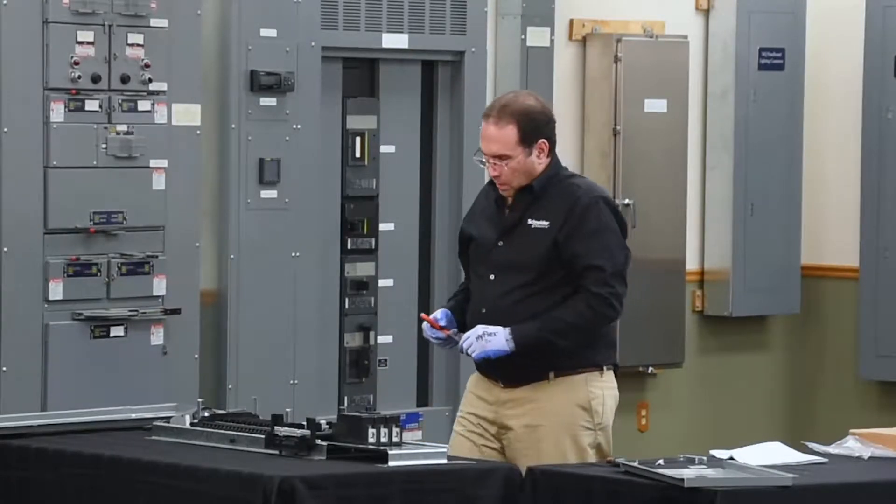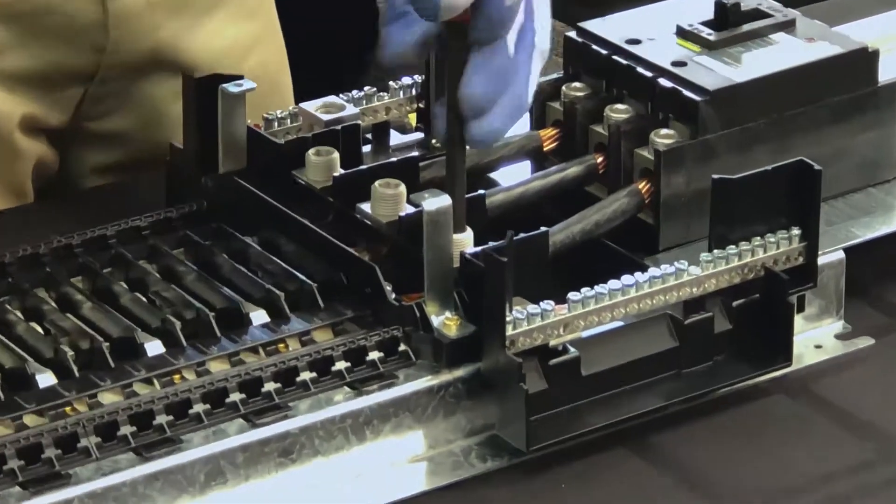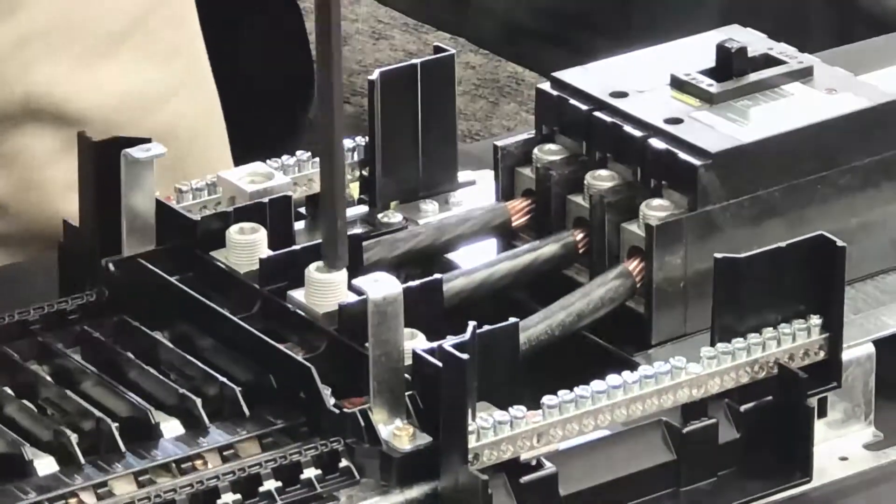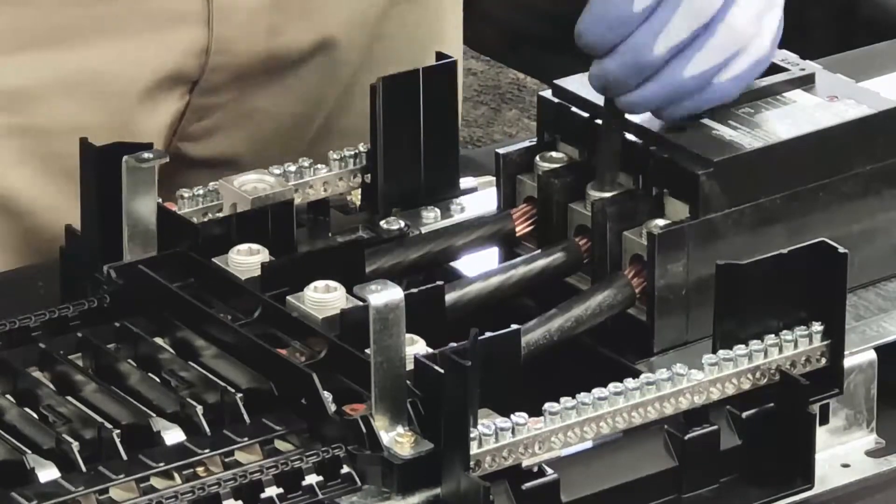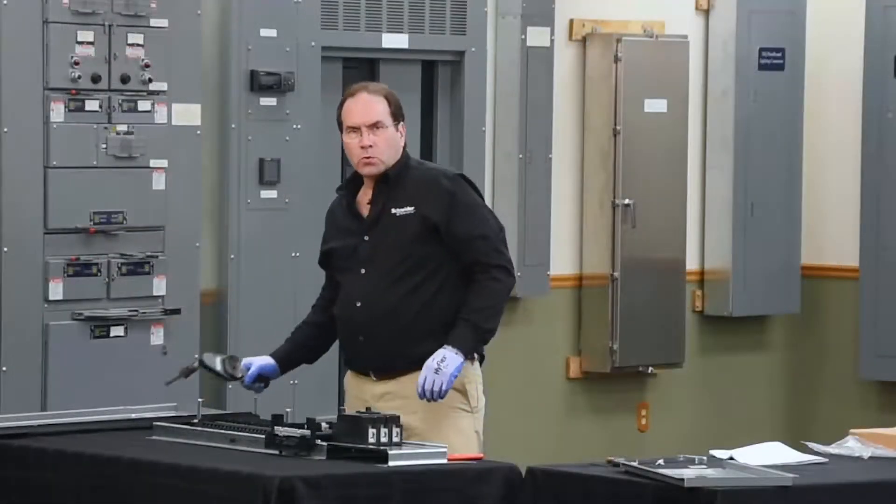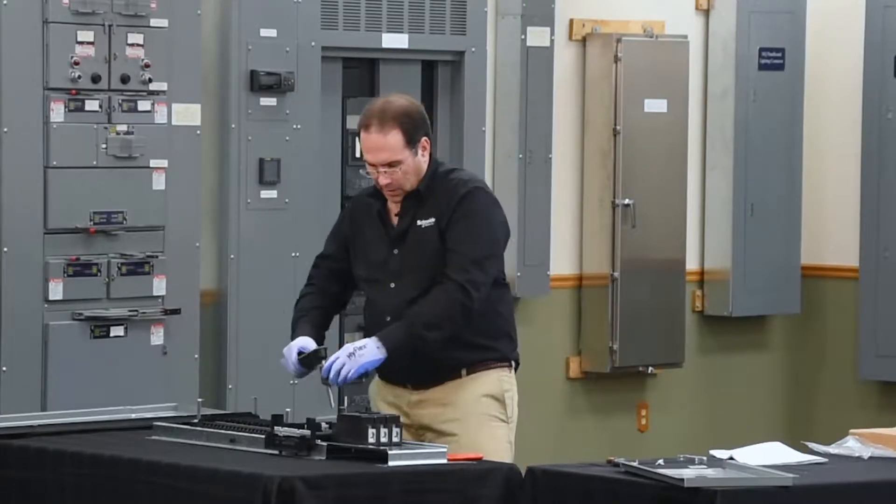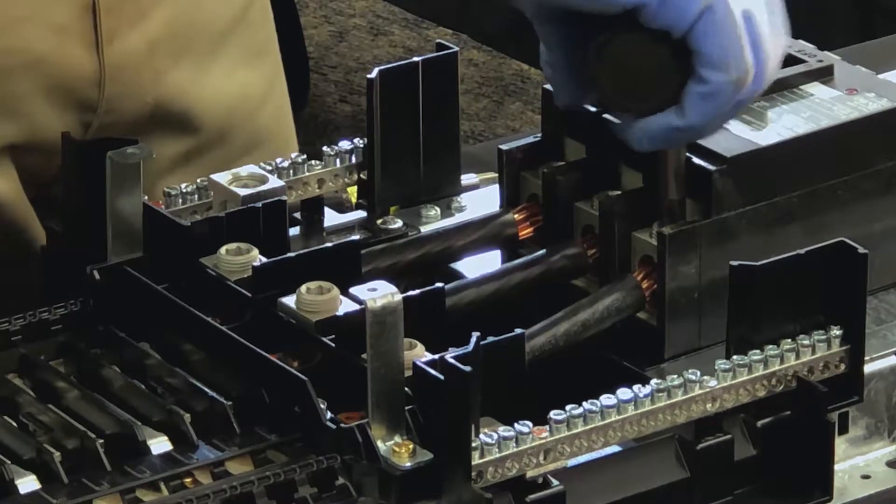Next, we'll tighten all of the six lugs. We'll use a torque wrench and tighten each lug to the specified torque that's in the instruction sheet that comes with the kit.